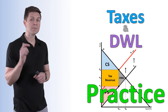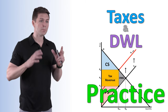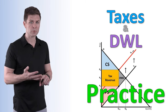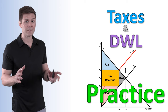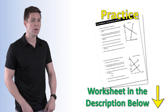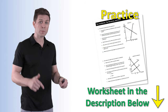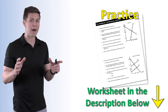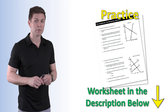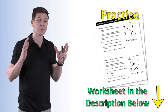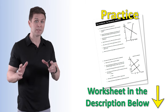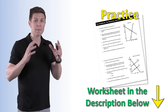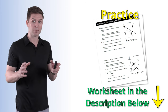Hey guys, welcome back to Econ Class. Today we're going to be doing some practice with taxation, consumer and producer surplus, and deadweight loss. In the description below, I've included a link to a worksheet. There are four different models that we're going to be looking at. We're going to see how different elasticities and different tax sizes impact the given market.